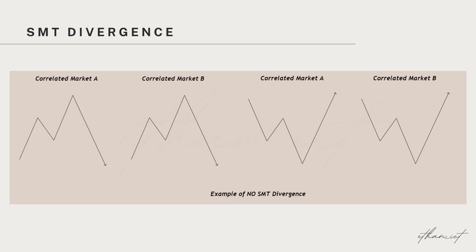In this diagram, there is no SMT Divergence because the markets are moving in sync. When market A on the left makes a higher high or a lower low, market B on the right also makes a higher high or a lower low. Here's that example of no SMT Divergence, where correlated market A is making a higher high, which means market B should also be making a higher high. Therefore, in this diagram, there is no SMT Divergence.